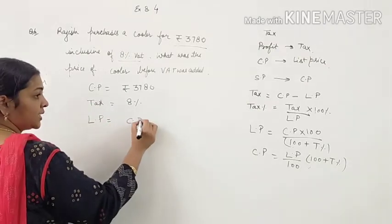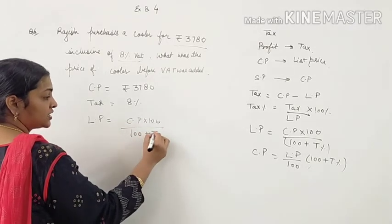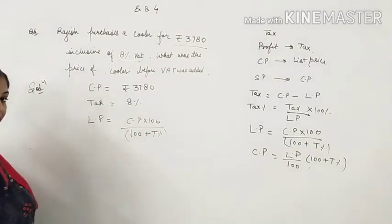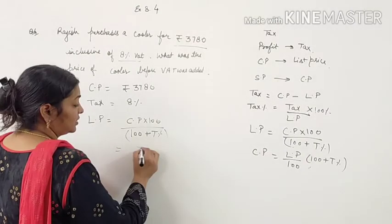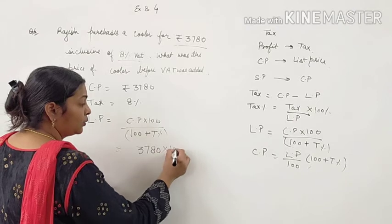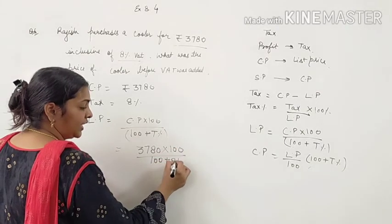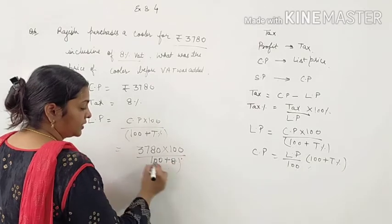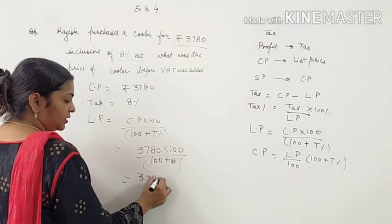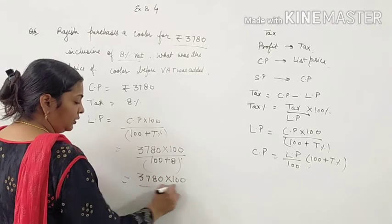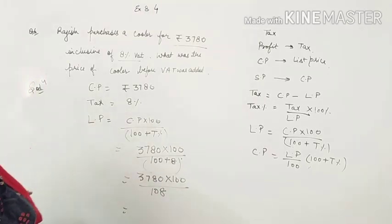The formula for list price is CP into 100 upon 100 plus tax percent. It will be 3780 into 100 upon 100 plus 8 percent. That means 3780 into 100 upon 108. Now solve it.